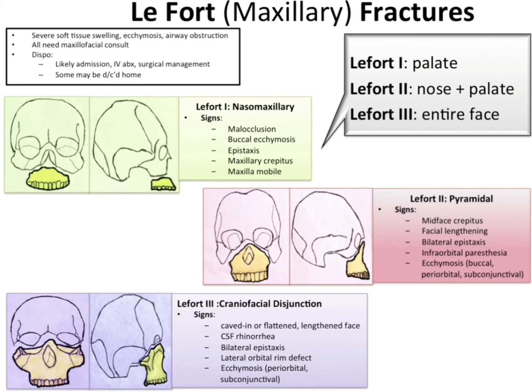In Le Fort 2, the pyramidal signs include mid-face crepitus, facial lengthening, bilateral epistaxis, infraorbital paresthesia, and ecchymosis — both buccal, periorbital, and subconjunctival.